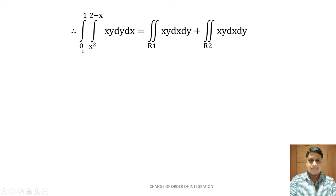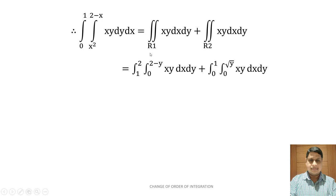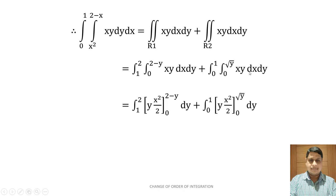Therefore, the double integral from 0 to 1, x² to (2−x), of x·y dy dx is split into two regions. We write: double integral over R1 of x·y dx dy plus double integral over R2 of x·y dx dy. The first region limits give: integral from 1 to 2, 0 to (2−y), of x·y dx dy, plus integral from 0 to 1, 0 to √y, of x·y dx dy. Integrating with respect to x, treating y as constant: x²/2 · y in both cases, with limits 0 to (2−y) and 0 to √y respectively.